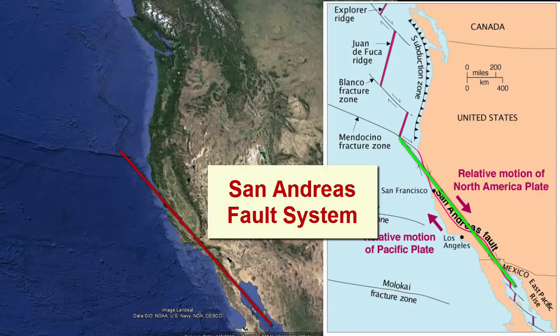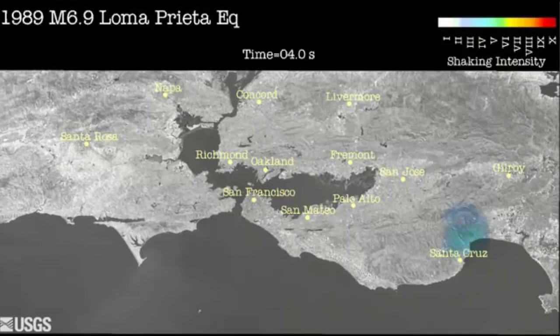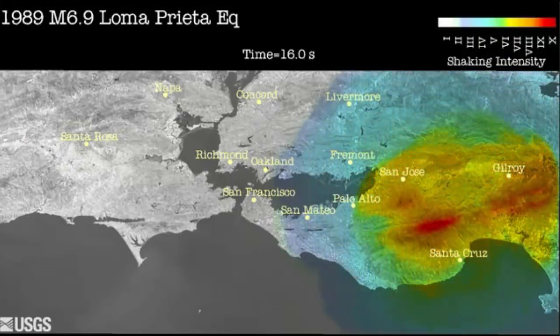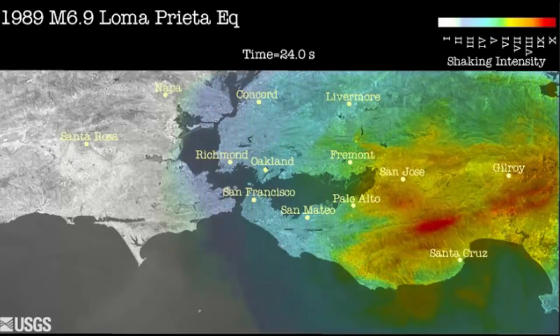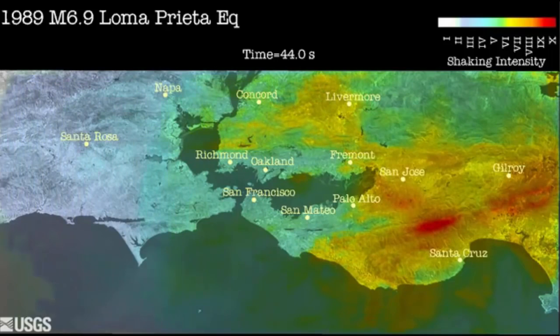Those of us who live along its path are familiar with its associated earthquake hazards. The Loma Prieta earthquake in 1989 was one of the most recent large earthquakes. The magnitude 6.9 earthquake caused significant shaking and damage from Santa Cruz to San Francisco as it released built-up stress related to the transform plate motion.